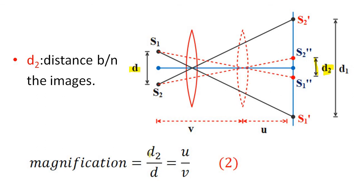Then magnification equals D2 by D. By geometry, we can write D2 by D equals U by V. Let it be equation 2.